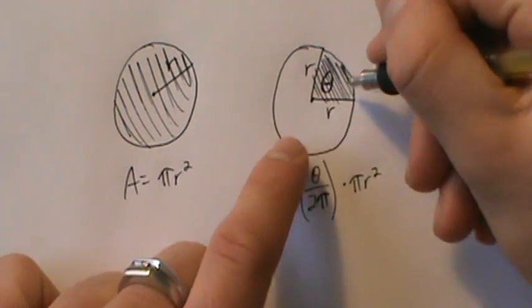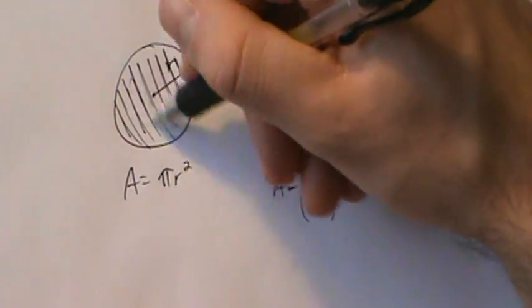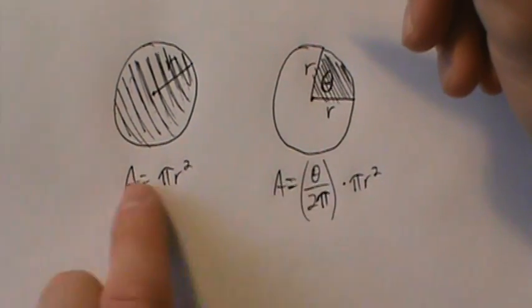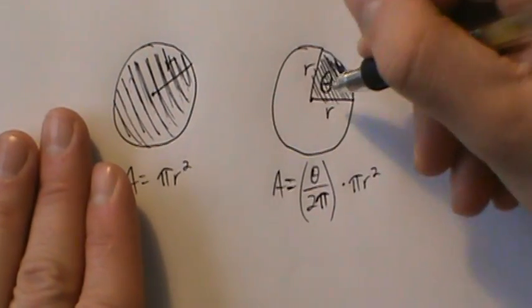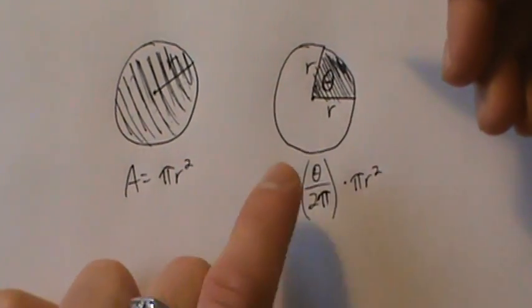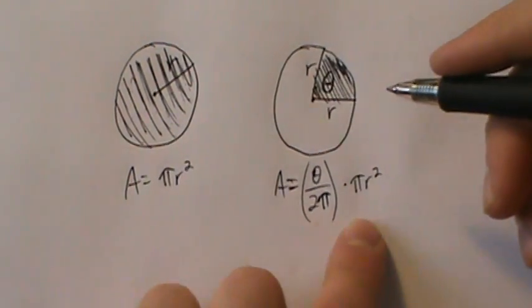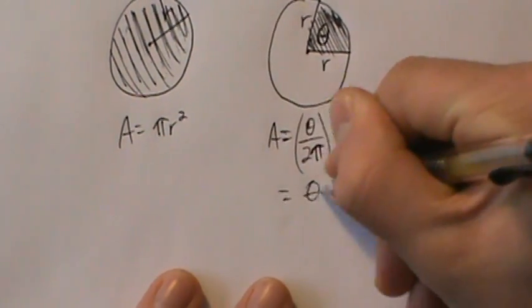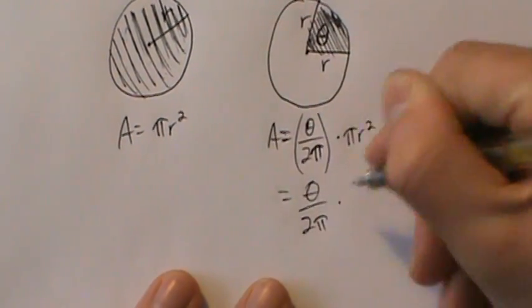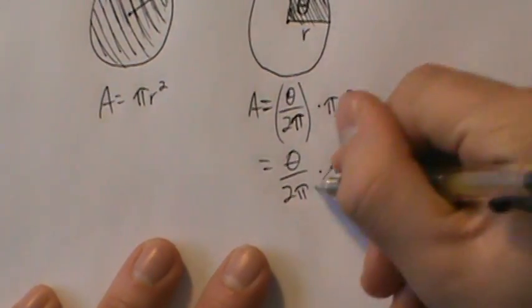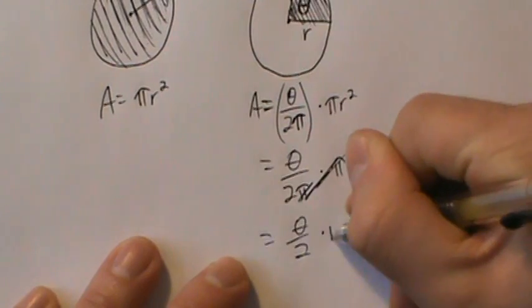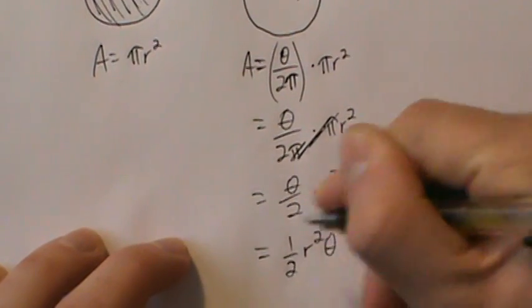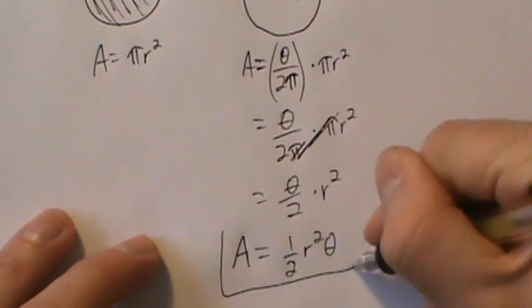If theta is 2 pi, that's the full circle, and 2 pi over 2 pi is 1, so this formula just becomes pi r squared, which is what we'd expect. For smaller values of theta, theta over 2 pi gives us the right proportion. So the formula is theta over 2 pi times pi r squared — the pi's cancel — giving us theta over 2 times r squared, more commonly written as one-half r squared theta. That's the formula for the area of a sector of a circle.